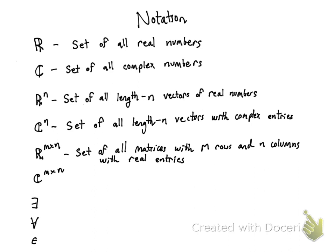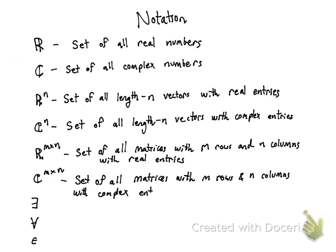And that's to be differentiated from Cᵐˣⁿ, which is the set of all matrices with m rows and n columns with complex entries. And actually, I'm going to take the time right now to adjust my definition of Rⁿ just to be consistent, to be the set of all length-n vectors with real entries. So I'll go ahead and do that. And then, of course, Cⁿ is the set of all matrices with m rows and n columns with complex entries.